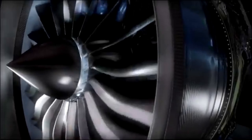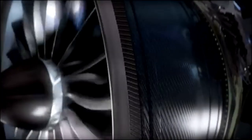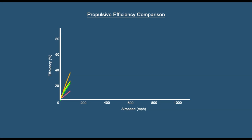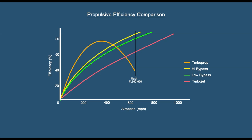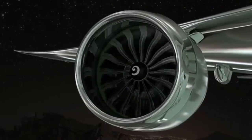High bypass turbofan engines are the backbone of modern commercial aviation. They're designed to be more efficient and quieter than older engine models. But what exactly makes them so advanced? We'll explore several key innovations that have been developed to push the boundaries of performance and efficiency.